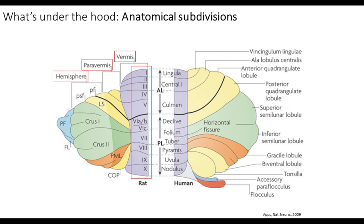The cerebellum from rostral to caudal can be divided across nine different folia within the vermal region. From medial to lateral, we can divide it into the vermis, paravermis, and hemispheres. Within the hemispheres, we can define anatomical subdivisions including the lateral, simplex, CRUZ1, CRUZ2, the paramedial globule, and the paraflocculus, et cetera.